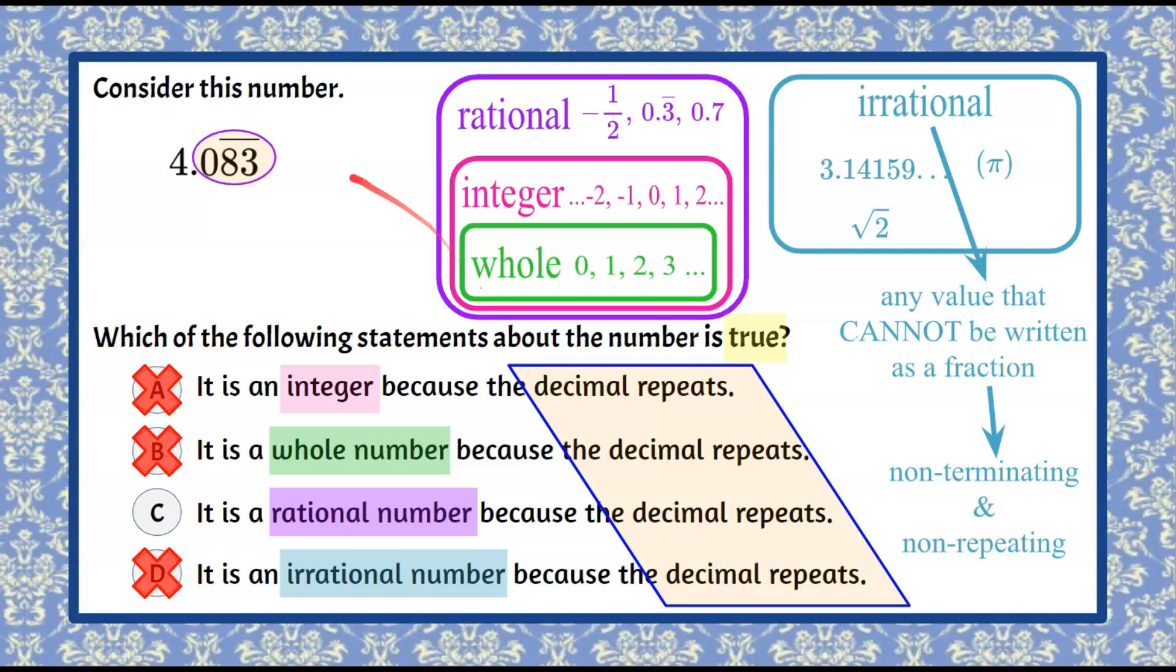So it does repeat, so that automatically tells us it's a repeating decimal. So rational numbers are also, by definition, any value that can be written as a fraction. Now, even though this looks a little wonky, it can be written as a fraction, and here's what it would look like, 4 and 83 over 990.